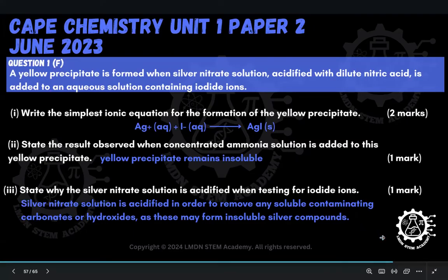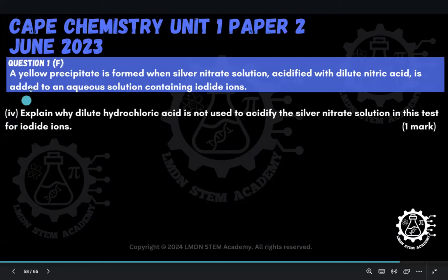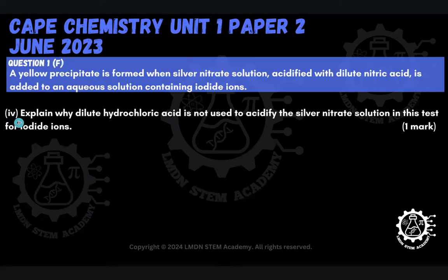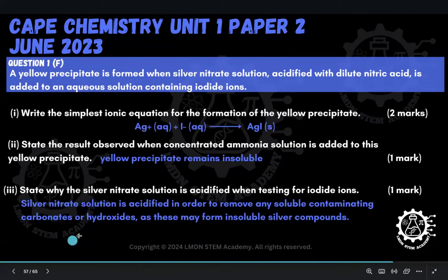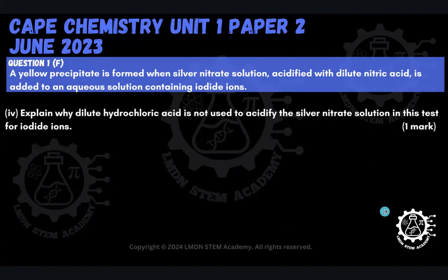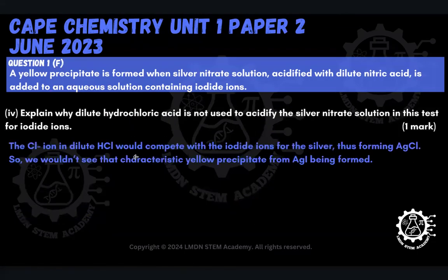Now we're moving on to the fourth part of this question, still in Question 1F. The fourth part asks: explain why dilute hydrochloric acid is not used to acidify the silver nitrate solution in this test for iodide ions. Previously, what did we use for acidification? We used dilute nitric acid. We don't use dilute HCl because it has chloride ions in it.